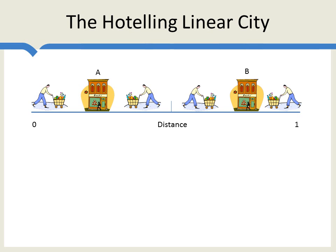Now, this is a very simple setup, but notice that location can be understood in more abstract ways other than literal distance. We might interpret this as left to right, or we might interpret this location as being in an abstract space of sweetness, where less sweet are located over here and more sweet are located over here. So this model of Harold Hotelling is going to be interpreted in a number of different ways.